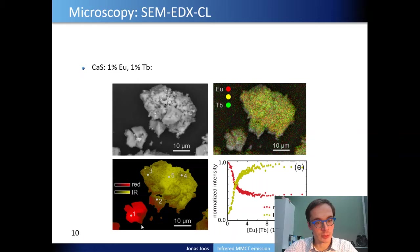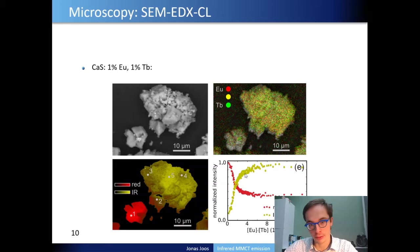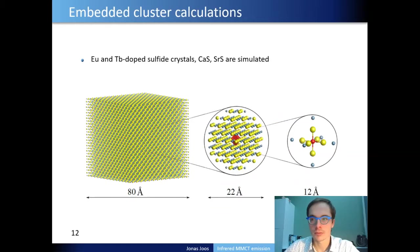This is reflected in the luminescence properties. The smaller grain where the dopants are separated is dominated by the red Europium 5D to 4F emission, whereas the larger grain where Europium and Terbium are well mixed shows the infrared luminescence. The infrared intensity increases with the product of the Europium and Terbium concentrations. At some equilibrium concentration the relative intensities do not change anymore and you have a maximum amount of infrared emission, but some remaining red emission persists. This result indicates that the infrared emission band must originate from a collaborative effect between the Europium and Terbium dopants.